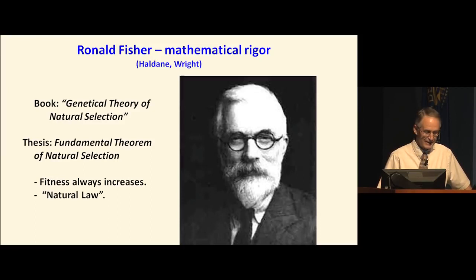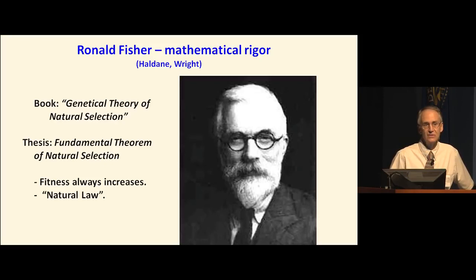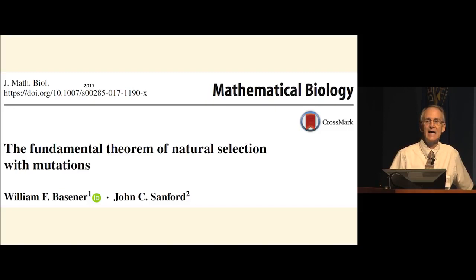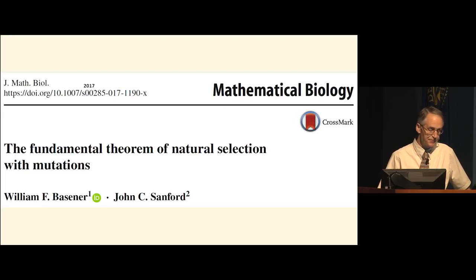This famous theorem — probably the most famous in biology — was accepted uncritically for about 90 years. Last year, a mathematician and I critically assessed his formulation and found major problems with it. One of the most foundational premises for his mathematics was the assumption that mutations had a net neutral effect. We now know that's clearly wrong, so it requires a reformulation. We have to include mutations in the equation, and that's what we published in Mathematical Biology. Fisher envisioned mutations arising with their effect ranging from very bad to very good, with neutrals centered — a balance so he could ignore the impact of mutations.